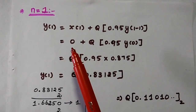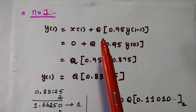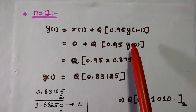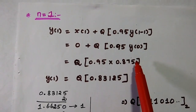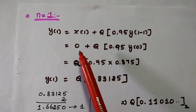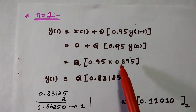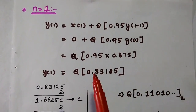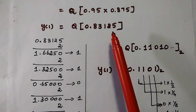Next, n equal to 1. The equation becomes y(1) = x(1) + Q[0.95·y(0)]. y(0) is the previous output value, 0.875. x(1) value is 0, so we get Q[0.95 × 0.875] = Q[0.83125]. Quantization is done in binary, so we must convert this decimal to binary.